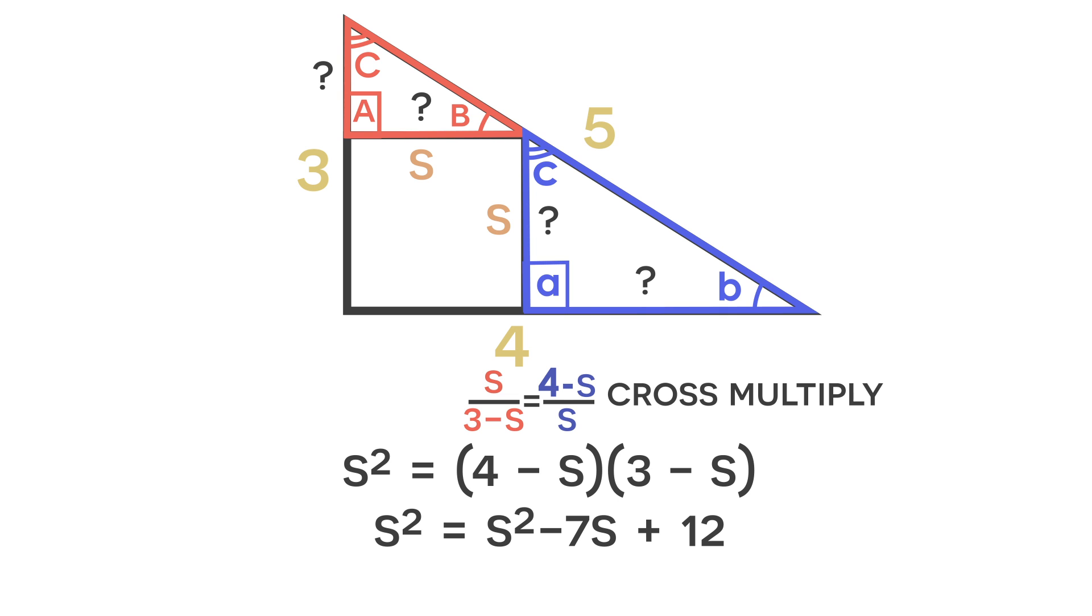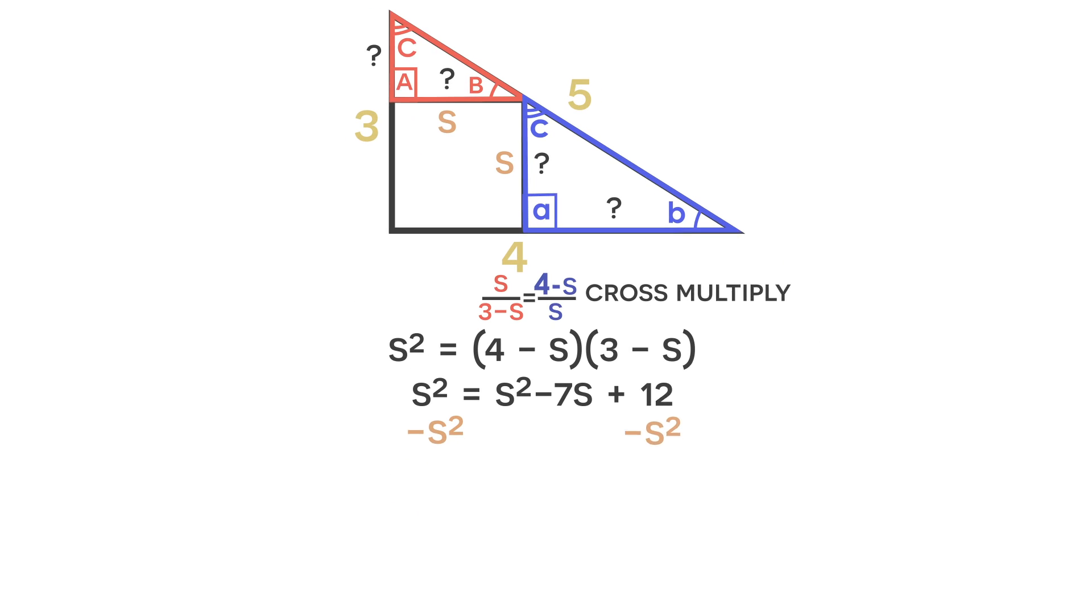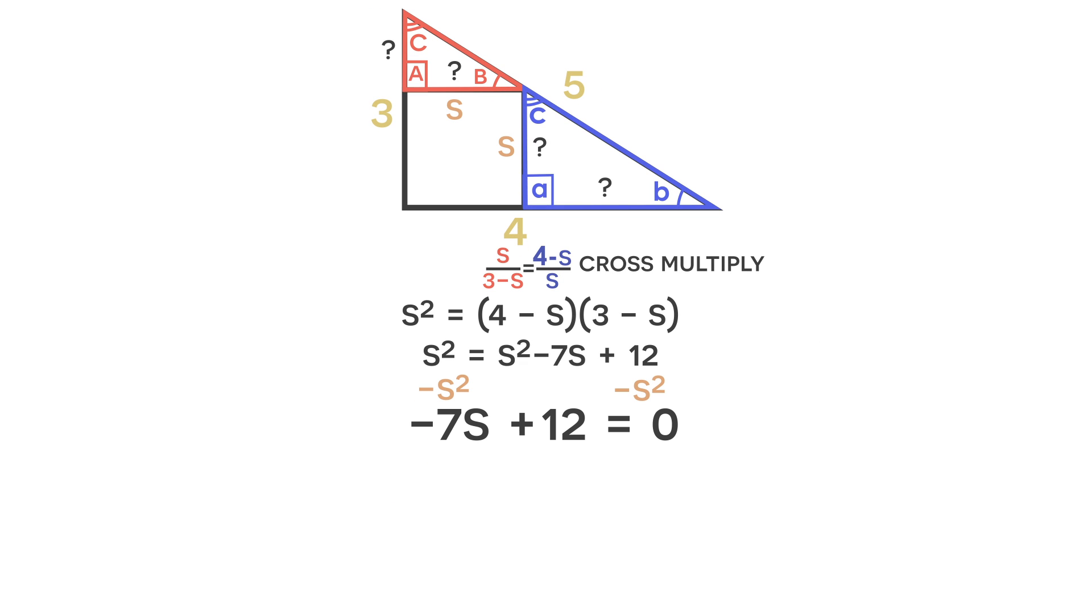So now we have s squared is equal to s squared minus 7s plus 12. And we can get rid of the s squared terms by subtracting s squared from both sides of the equation. And now we are left with negative 7s plus 12 is equal to 0. We can solve for s and we know that s is equal to 12 over 7.